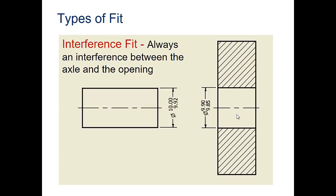Interference fit: there's always interference between the axle and the opening. If we look at the smallest the hole can be, it would be 9.85. The biggest the axle could be would be 10.00. Obviously the axle would be larger than the hole, so you'd have to have some kind of force to push the axle into the hole, and therefore you would have interference so that part is not made to move once it's been inserted into the hole.